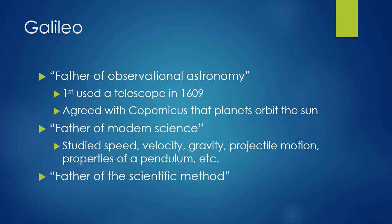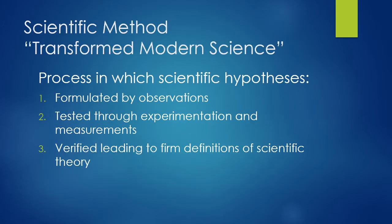Galileo was also known as the father of the scientific method. If you remember from Chapter 1, the scientific method was an organized approach to solving scientific problems. Galileo was the first to come up with this idea of an organized approach, and it transformed modern science.